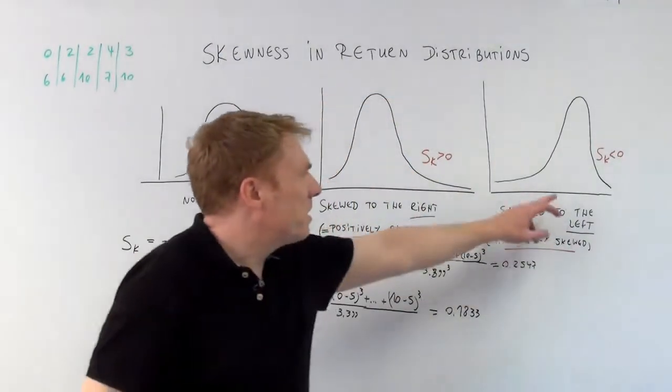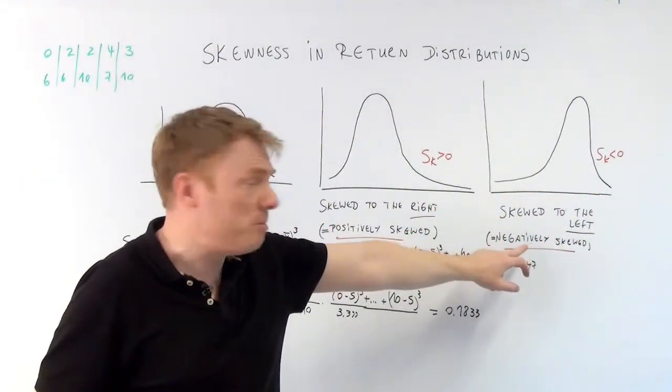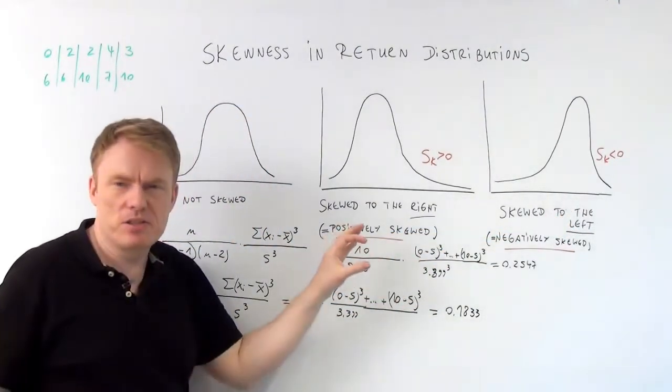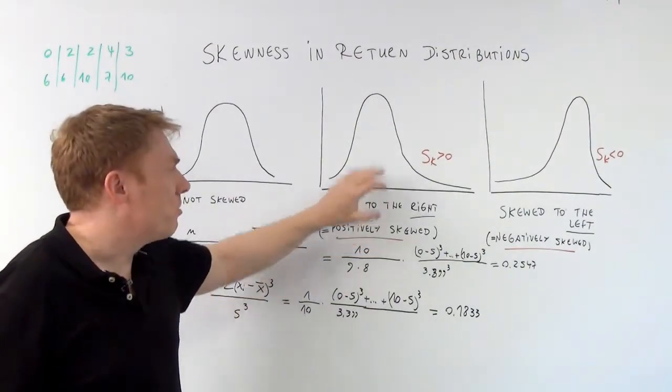Whereas if it is strictly inferior to 0, it's called a negatively skewed distribution. Negatively skewed is skewed to the left, while positively skewed is a return distribution skewed to the right.